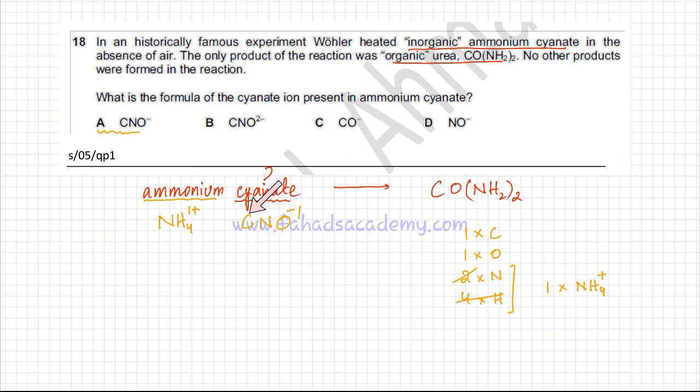So the C, the N, one of the Ns, and one of the oxygen must be coming from cyanate. And since ammonium has a plus one charge and there is only one ammonium, the cyanate must be having a minus one charge to give a neutral compound. Hence the answer is going to be option A.